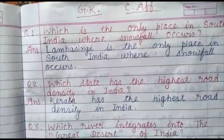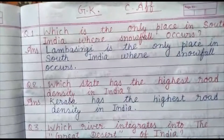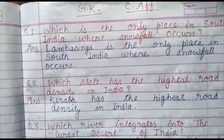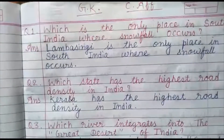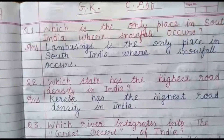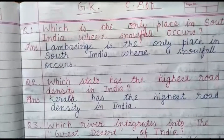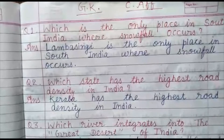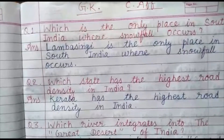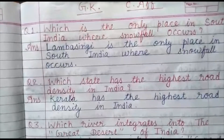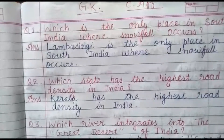Now question number 2. Which state has the highest road density in India? Its answer is Kerala has the highest road density in India.